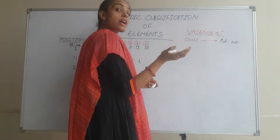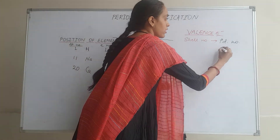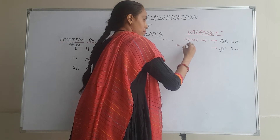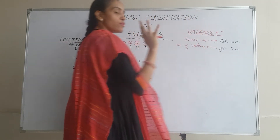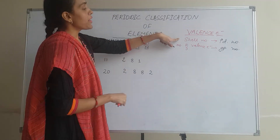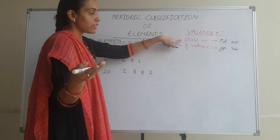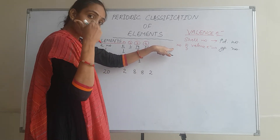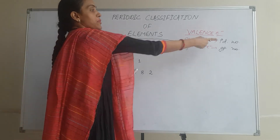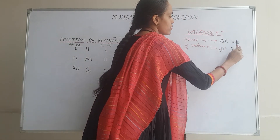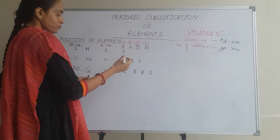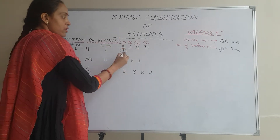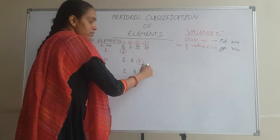It is that simple. And if I want to know the group number — in which group do they exist — we have to check the number of valence electrons. This is the rule, the simplest trick to find out: the valence electron is in which shell — that shell number gives the period number. And how many valence electrons are present — that number gives the group number. Valence means the outermost electron, so the outermost electrons are the valence electrons.